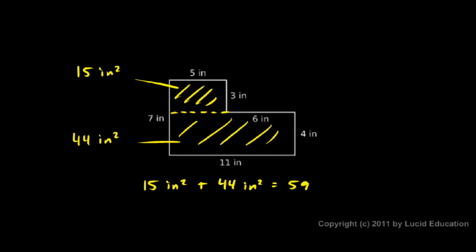So the total area will be those two added together: fifteen square inches plus forty-four square inches is fifty-nine square inches, the same answer we got when we did it the other way.